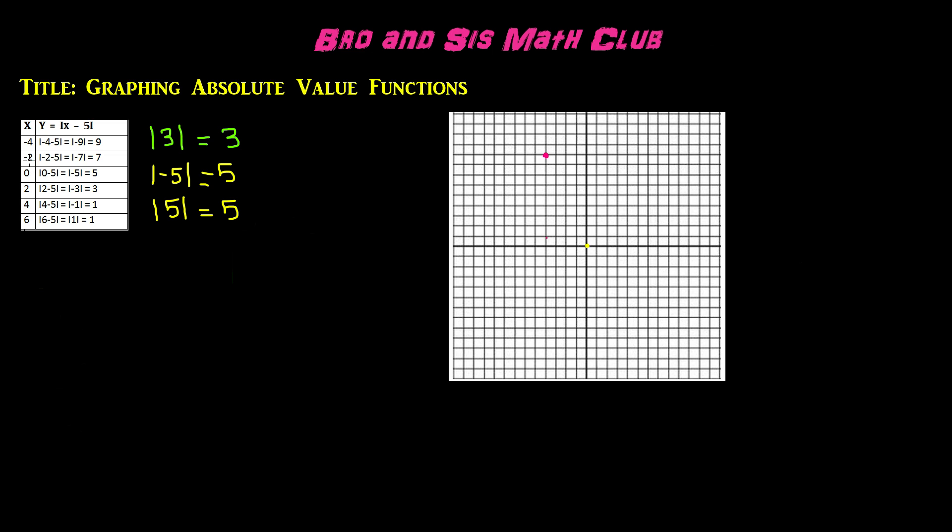Now, we have negative 2 and positive 7. Remember, we just simply substituted negative 2 into the function, and we got the absolute value of negative 7, which is positive 7. So, we have negative 2 and then up 7 units. Here is our second point.